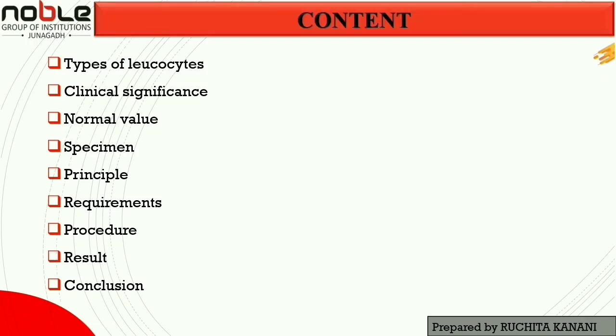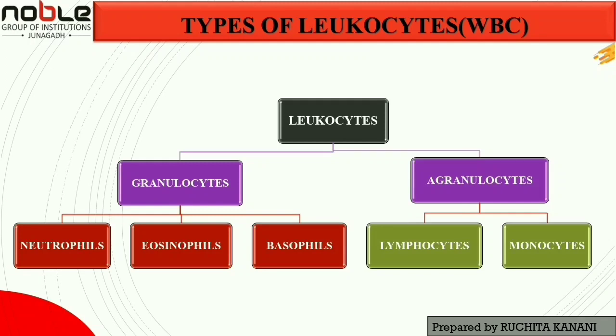Before starting our practical part, we will look into different types of leukocytes. There are two major categories: granulocytes and agranulocytes. In granulocytes, there are three types — neutrophils, eosinophils, and basophils. In agranulocytes, there are two types — monocytes and lymphocytes. The function of each type of WBC is specific and the number is also different per 100 counts.